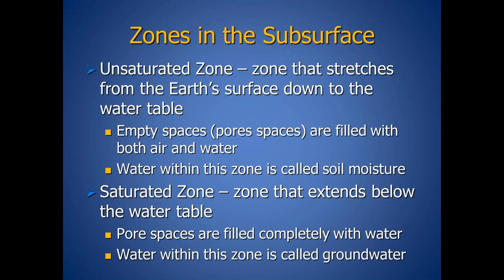When it comes to the subsurface, there are two major zones. The first is the unsaturated zone — from the Earth's surface down to the water table, which is the boundary between the two zones. In the unsaturated zone, empty spaces are filled with both air and water; any water found here is classified as soil moisture, not groundwater. The other zone is the saturated zone, extending below the water table, where empty spaces are 100% filled with water. This is where groundwater resides.